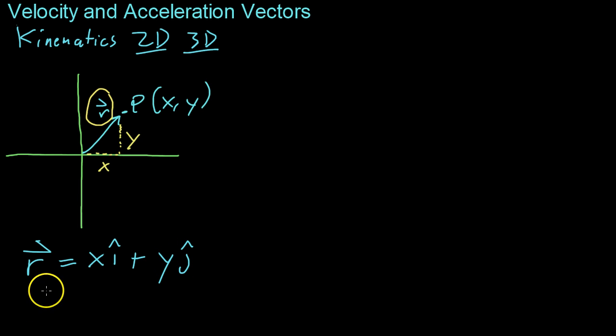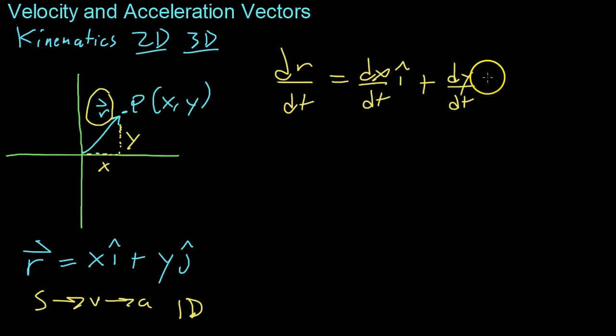Similarly, just as you could take your position and derive it to get a velocity and derive again to get acceleration in one dimension, you can do the same thing with vectors in two dimensions. So if you derive this R with respect to time, you get a derivative with respect to X and a derivative with respect to Y